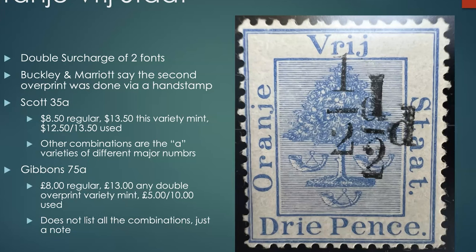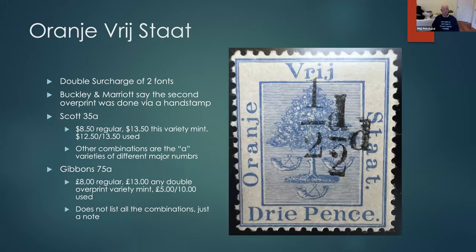Looking in the Buckley and Marriott book, there are literally hundreds of varieties depending on exactly which typefonts were used. Gibbons does not list all the combinations — it just has a note saying they have double overprints with a variety of combinations of the font. It varies by catalog and by stamp how many varieties are listed and how they're mentioned.